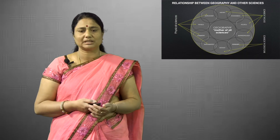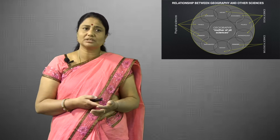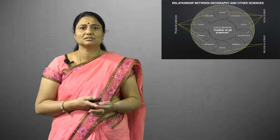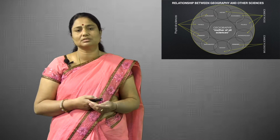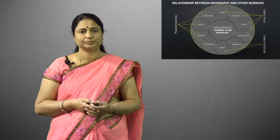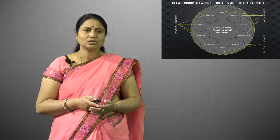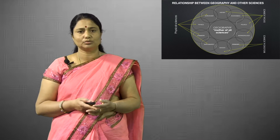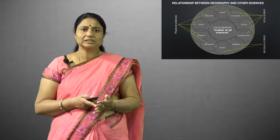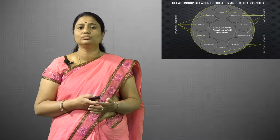Geography and mathematics: mathematical knowledge is required to know the shape, circumference, weight, volume, distance between places, latitudes and longitudes. In this way, the two are closely related. Geography and astronomy: astronomical knowledge is required to know the position of the earth in the universe, the earth in the solar system and their planets, the sun, the moon, etc.